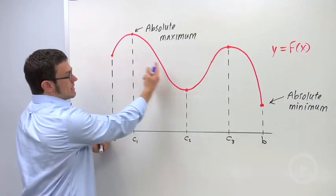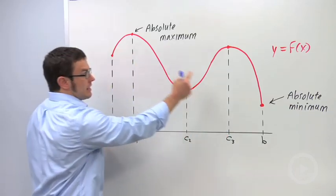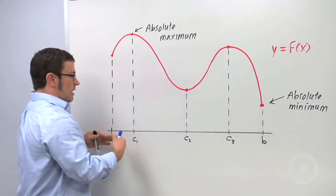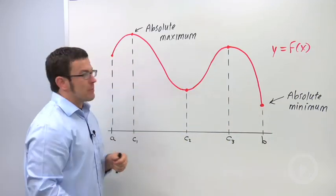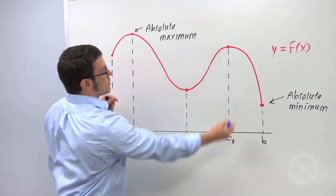Closed means that it contains its endpoints. The function is going to be defined at each endpoint. And bounded means that it's got a limited length. So this is a function defined over a closed bounded interval.